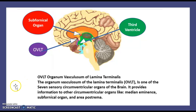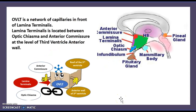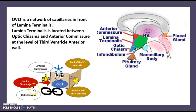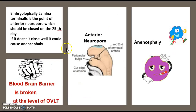Where is the OVLT exactly? If you look at the third ventricle, you can look at it as a box — it has an anterior side, a posterior side, a medial side, and a lateral side. If you look at the anterior side of the third ventricle, in front of it lies the optic chiasm, and in between the optic chiasm and the anterior side of the third ventricle is the lamina terminalis. In front of the lamina terminalis lies the OVLT.